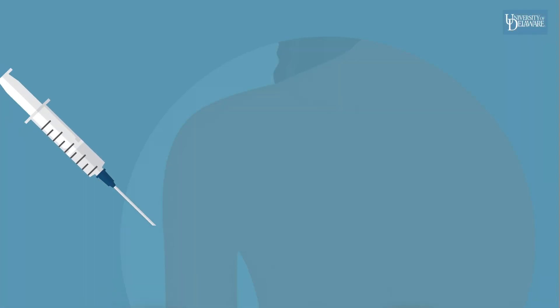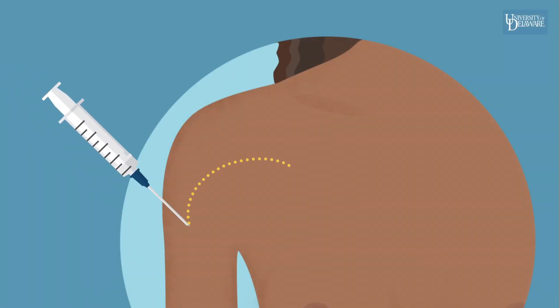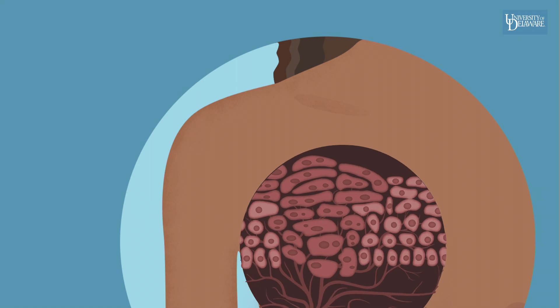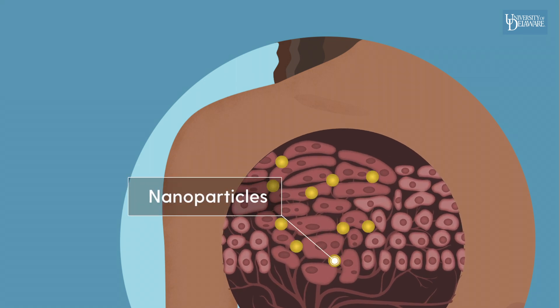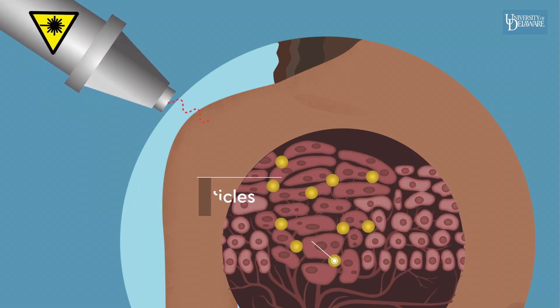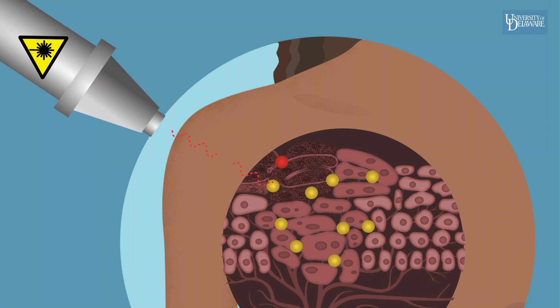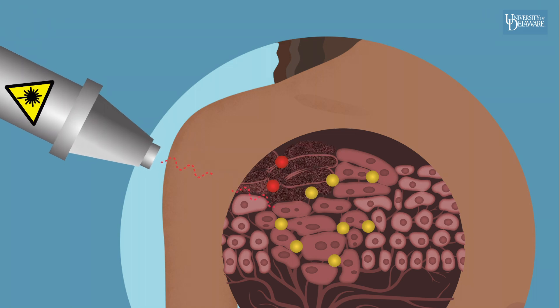In photothermal therapy, light-sensitive nanoparticles are administered into the bloodstream and accumulate within tumor tissue due to its loose vascular structure. Once the agents reach the tumor site, laser light is applied and they respond by heating up and burning the cancer cells around them.